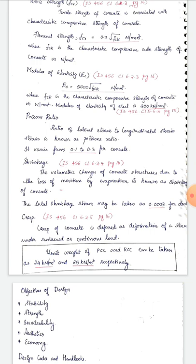Shrinkage is the volumetric change of a concrete structure due to loss of moisture content by evaporation. The total shrinkage strain may be taken as 0.0003.